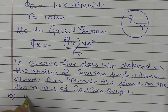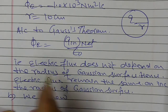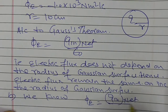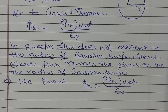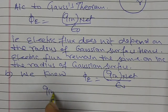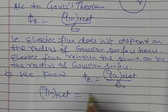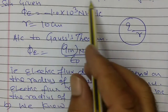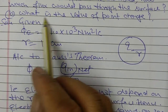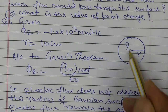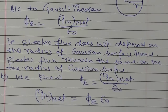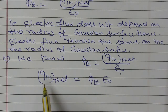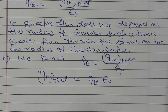We know this electric flux is equal to Q inside net upon epsilon naught. Therefore, Q inside net is equal to phi E into epsilon naught. In the second part, we need to calculate what is the value of the point charge. From Gauss's theorem, phi is equal to Q inside net upon epsilon naught, so Q inside net equals phi E into epsilon naught.